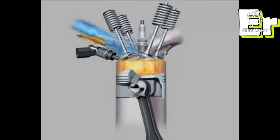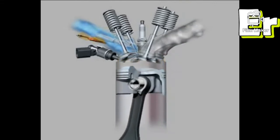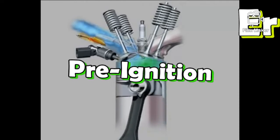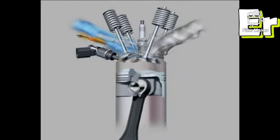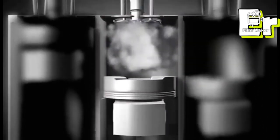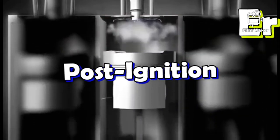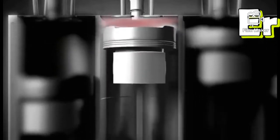If the spark production happens before the optimum time to generate the mean best torque, it is called pre-ignition — the spark is generated before top dead center, earlier than ideal. If the spark production happens after the optimum level, it is called post-ignition. This is the fundamental difference between pre-ignition and post-ignition.